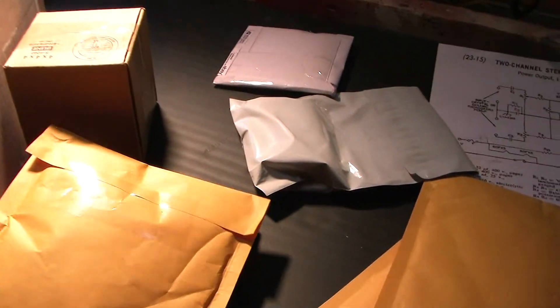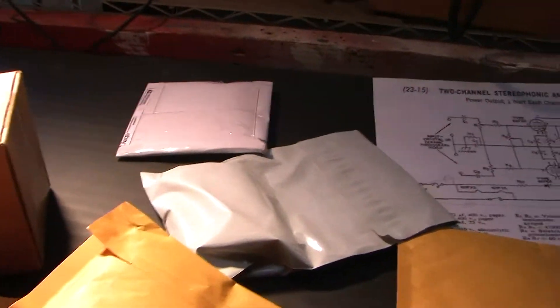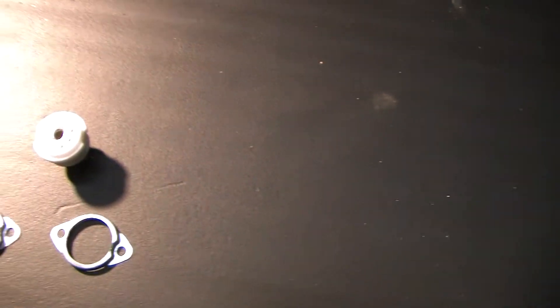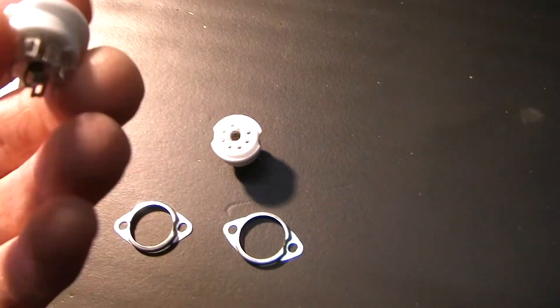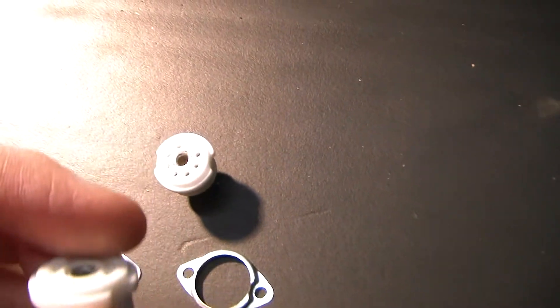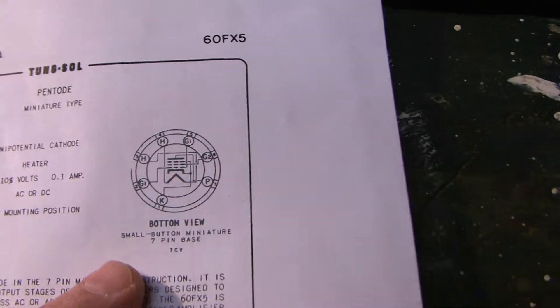So let's go ahead and open these up and see what we got. Alright, the first thing I got are these little tube sockets, they're ceramic. I don't have the tubes yet, the 6FX5s. On the datasheet, I've never worked with 6FX5s before, so the datasheet required a small button miniature 7-pin base and that's what I ordered, so I'm hoping they fit.